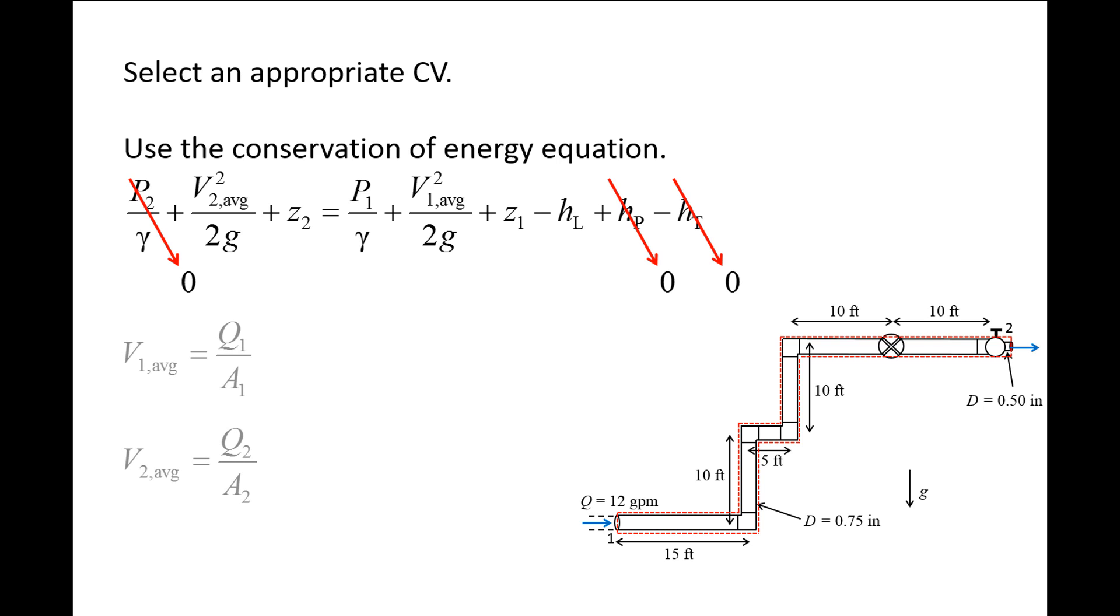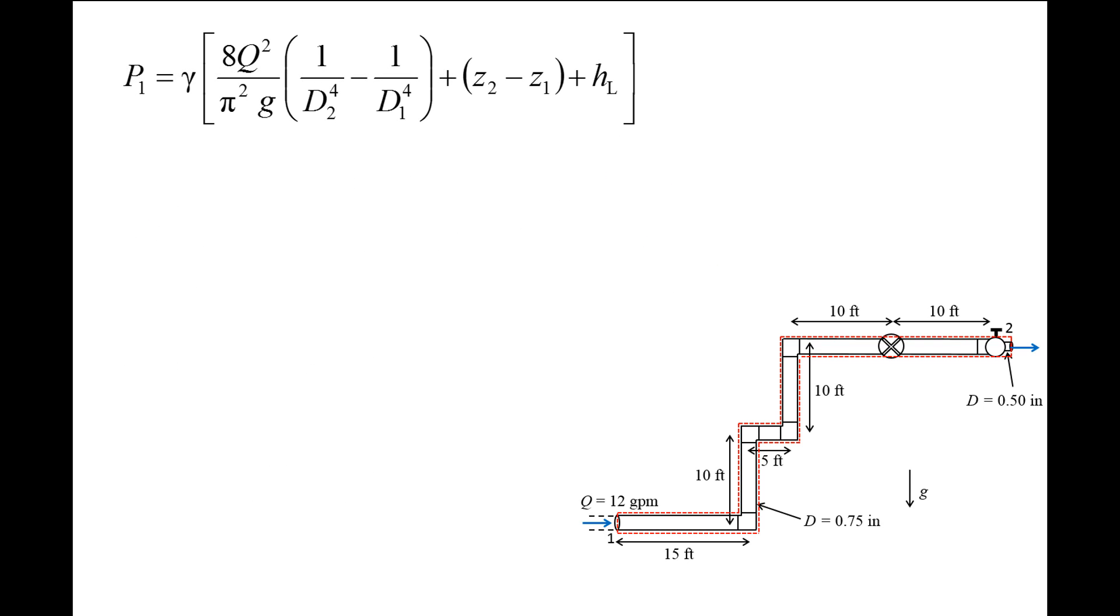The velocity at the inlet and outlet can be calculated by dividing the volumetric flow rate Q by the area A. Since we have steady flow conditions, Q1 is equal to Q2, and we will refer to the flow rate as simply Q. The area of the pipe is pi over 4 times the diameter squared. We can substitute the expression for V1 and V2 into the conservation of energy equation and solve for P1.